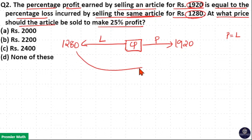So take the difference between these two selling prices. 19.20 minus 12.80 is 640. Here profit plus loss is equal to 640.